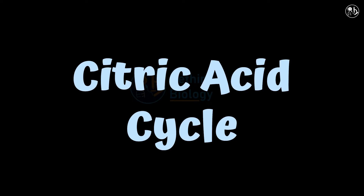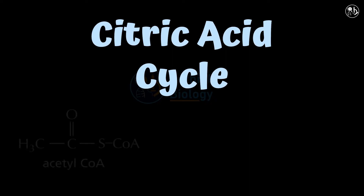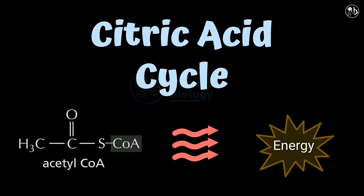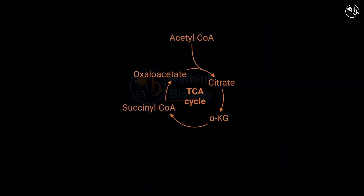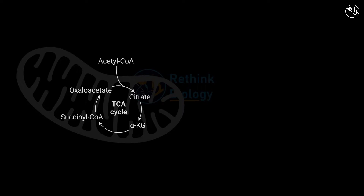Hello and welcome to this video on the citric acid cycle, a process of extracting energy from acetyl-CoA, which is a molecule derived from carbohydrates, proteins, and fats. The citric acid cycle, also known as the Krebs cycle or tricarboxylic acid cycle or TCA, is a series of chemical reactions which take place in the matrix of the mitochondria in eukaryotes.